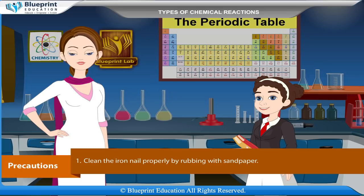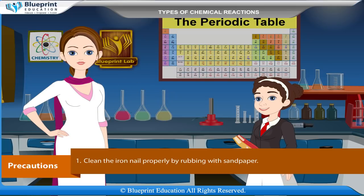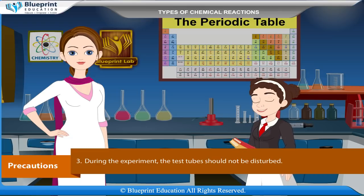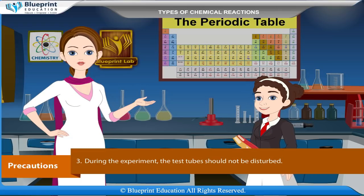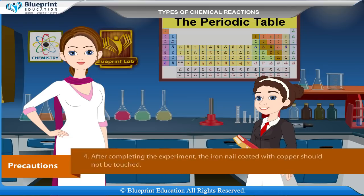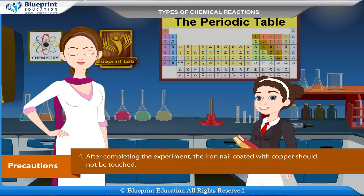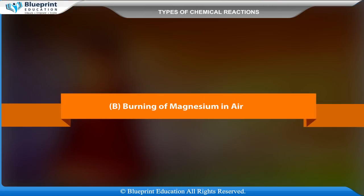Precautions: Clean the iron nail properly by rubbing with sandpaper. Copper sulphate solution is poisonous, so handle it with care. During the experiment the test tubes should not be disturbed. After completing the experiment, the iron nail coated with copper should not be touched.